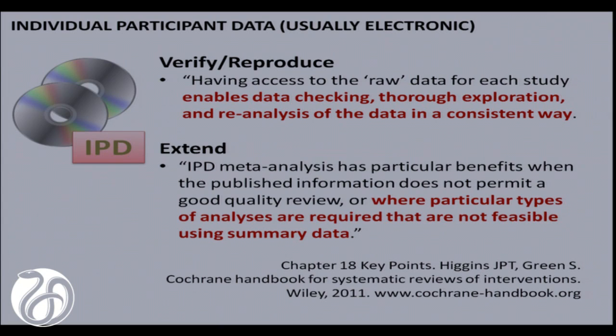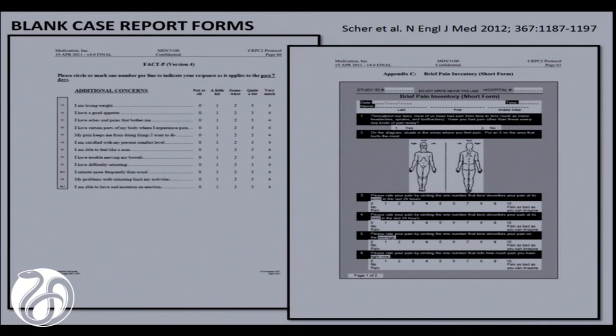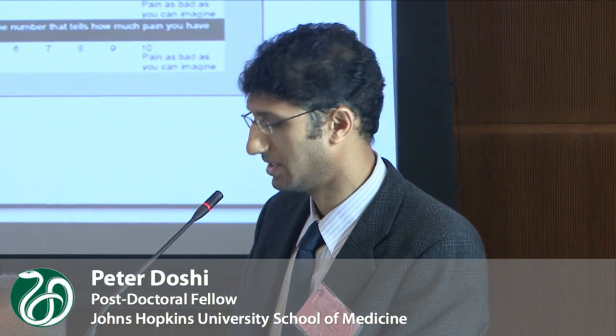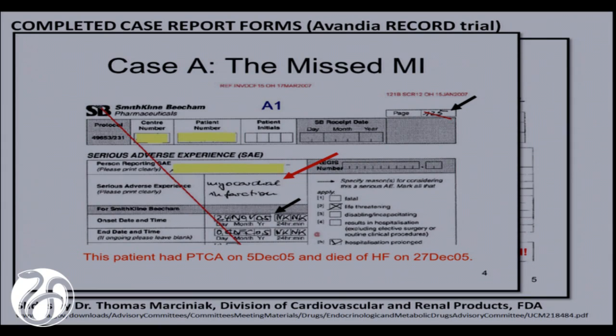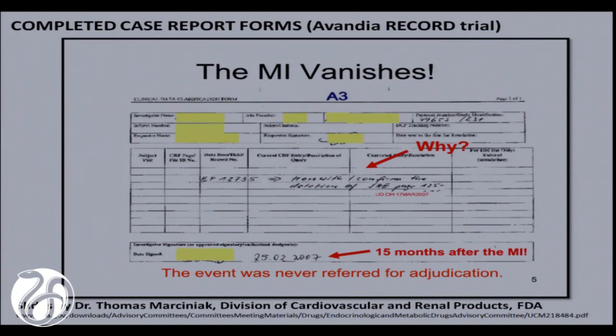We've talked much about individual patient data, IPD, at this conference. IPD is commonly believed to allow for the verification and reproduction of trial results, as well as enabling additional analyses. But there is a basic assumption here that IPD is trustworthy. Please recall that it is the case report forms, created before the trial begins — a blank copy of which is included in clinical study reports — on which actual patient data are collected. Sometimes the IPD computerized database does not reflect what is recorded in the case report forms. This example comes from an FDA medical officer who reviewed the Avandia RECORD trial, and found that although the patient had a myocardial infarction recorded, it was never referred for adjudication and simply disappeared from the so-called raw data that is the IPD.